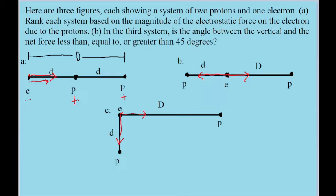This alone tells us a lot about the answer, because in situation A, both of the vectors are pointing in the exact same direction with no angle between them. This is crucial because two vectors are at their highest possible magnitude when they're pointing in the same direction, which means that situation A must have the greatest electrostatic force on the electron — both forces are parallel, so the total force is greatest.